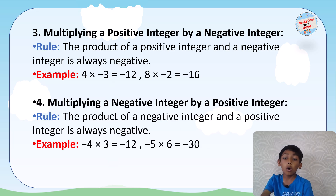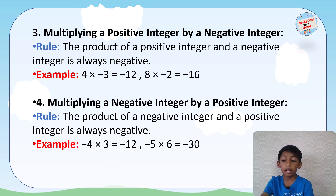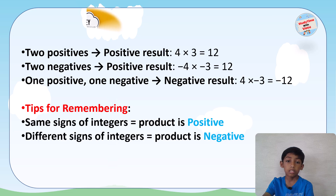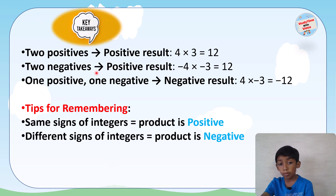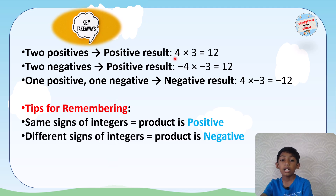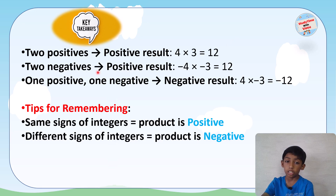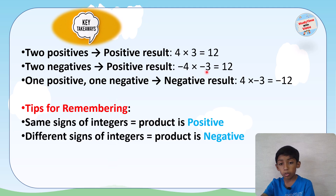I hope you have understood this concept very clearly. Now let's learn the key takeaways. Two positive integers multiplied together equal a positive result — like 4 × 3 = 12. Two negative integers multiplied together also equal a positive result — like (−4) × (−3) = 12.